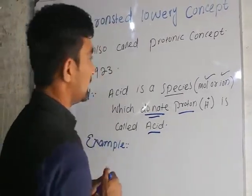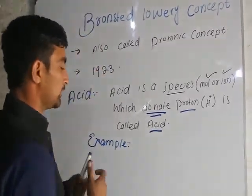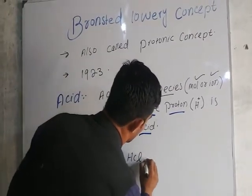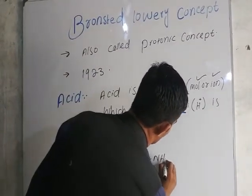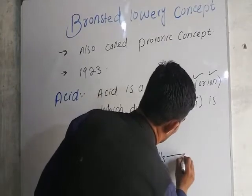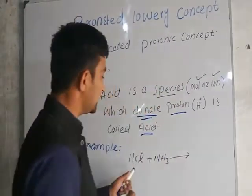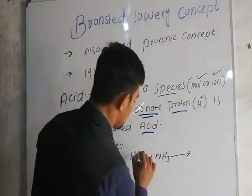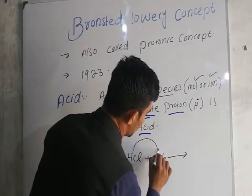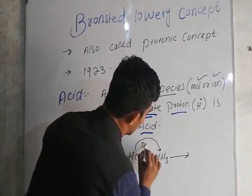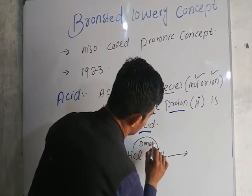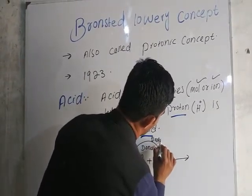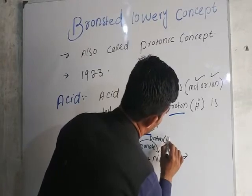The hydrogen ion is explained by the following example. For example, HCl plus ammonia. When HCl and ammonia react with each other, HCl donates a proton. Proton means hydrogen ion.